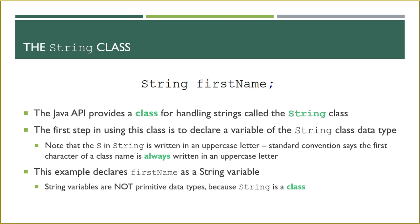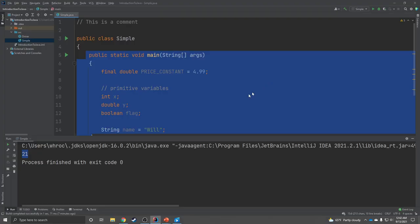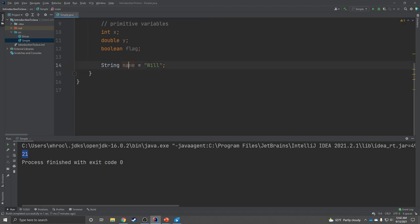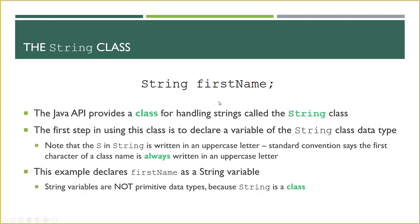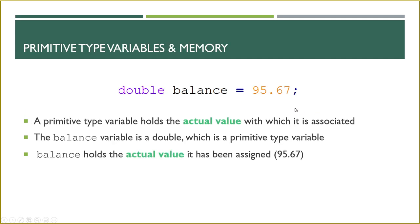The Java API gives us the String class for handling strings — notice the capital S. The first step in using this class is to declare a variable of the String data type. For example, declaring a variable named firstName with data type String — capital S. That's how you use a string object. It works a lot like a primitive, but strings are not primitive variables.